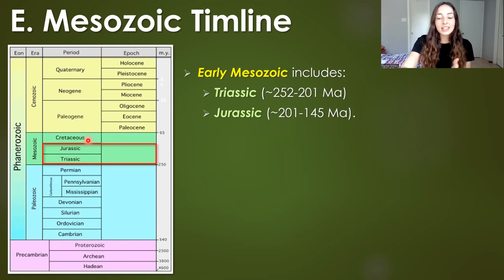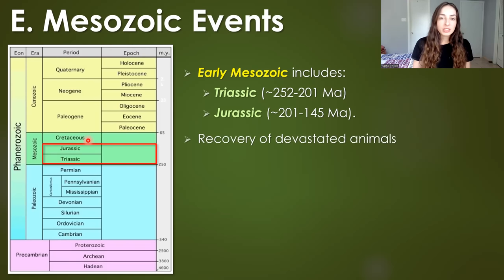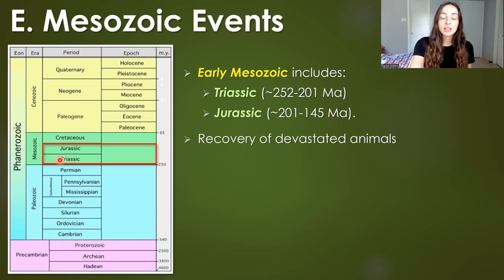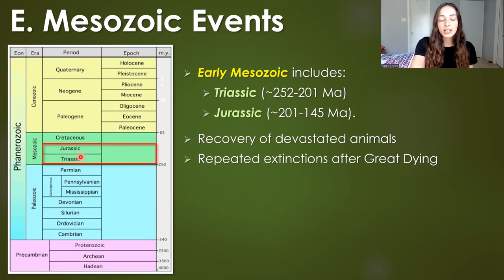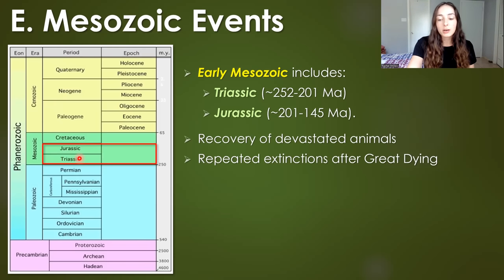The key events that happened during these two periods were the recovery of devastated animals after the Great Dying, or the end-Permian mass extinction — the largest extinction event of all time — and then we had repeated extinction events after the Great Dying in the early Triassic period, which I talk about in my early Mesozoic ocean life video linked up to the top right.